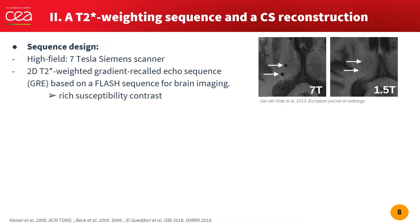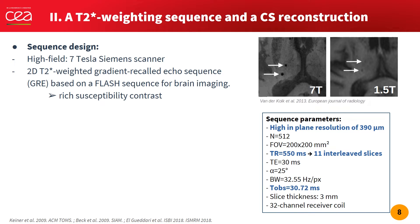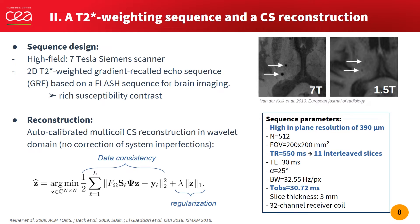To illustrate the interest of our new method, we used the SPARKLING trajectories for T2-star weighted brain imaging. It is a classical contrast at 7 Tesla because of the enhanced susceptibility effects offered at high field. Following standard T2-star weighting 2D protocols at 7 Tesla, we used a long TR of 550 ms and a long readout of 30 ms, which allowed acquiring 11 interleaf slices per TR. Finally, we used a standard parallel compressed sensing reconstruction in the wavelet domain to reconstruct our data.